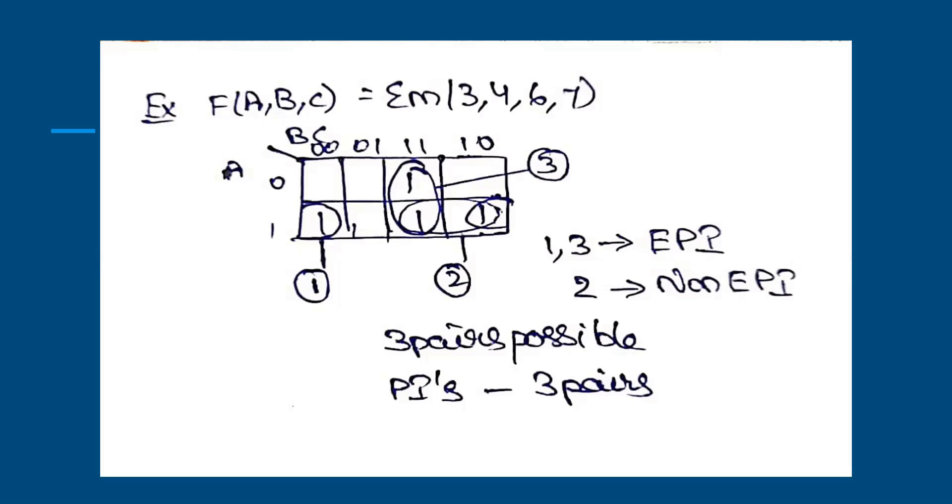Here, what are the essential prime implicants? What are the implicants? What are the prime implicants? Sets 1 and 3 are essential prime implicants. As we previously discussed, they have at least one minterm that is not shared by others. Here, sets 3 and 1 have one minterm each that cannot be shared by adjacent pairs because no adjacent ones are available. Set 2 is non-essential prime implicant because it is shared by sets 3 and 1. So it cannot be an essential prime implicant. What are the implicants? All possible pairs. Here, 3 pairs are possible, so 3 implicants.